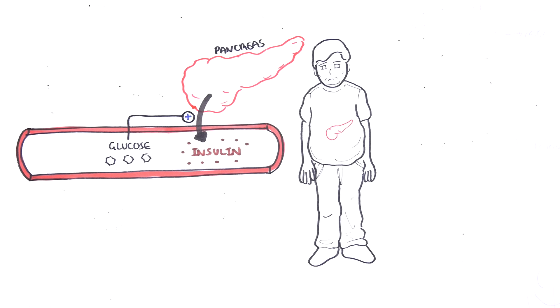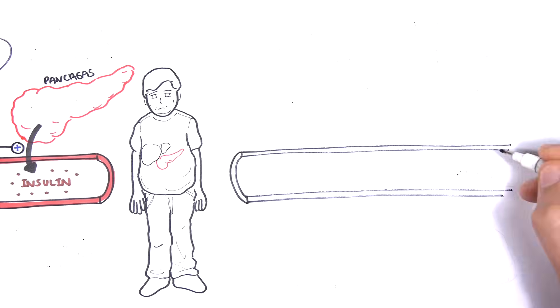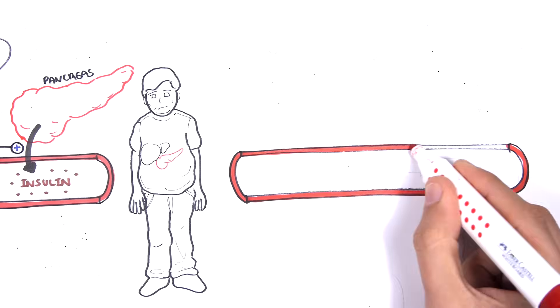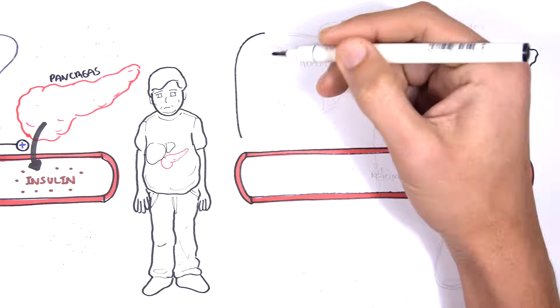Before continuing on with the pathophysiology of diabetes, we actually need to understand what normally happens and how insulin works in a normal scenario. So again here is the circulation, here is the liver and here is the pancreas.